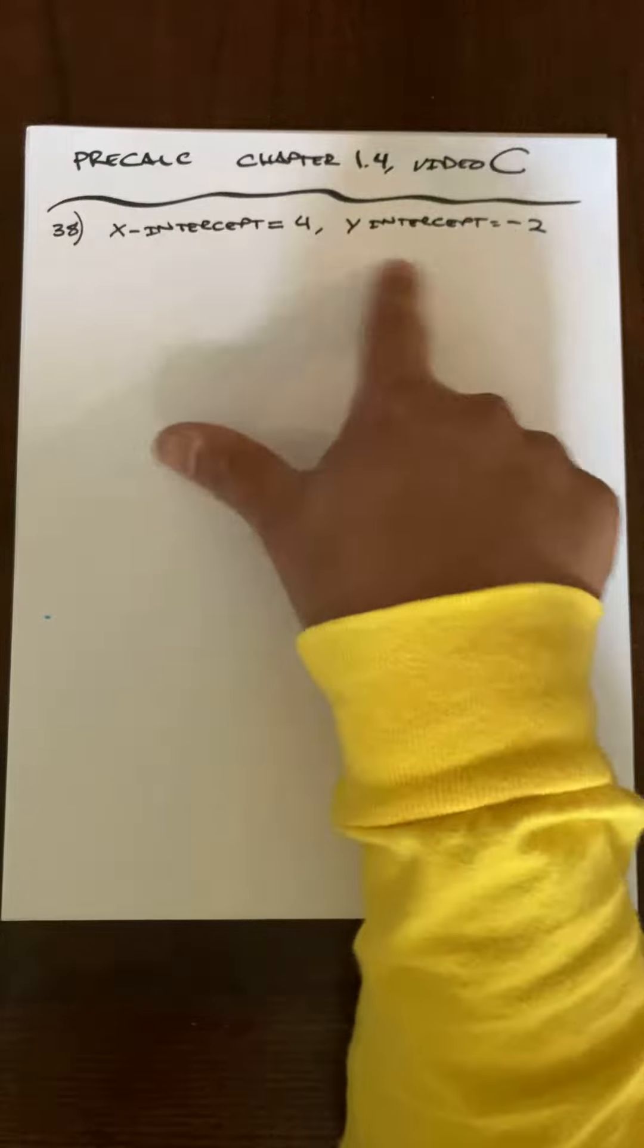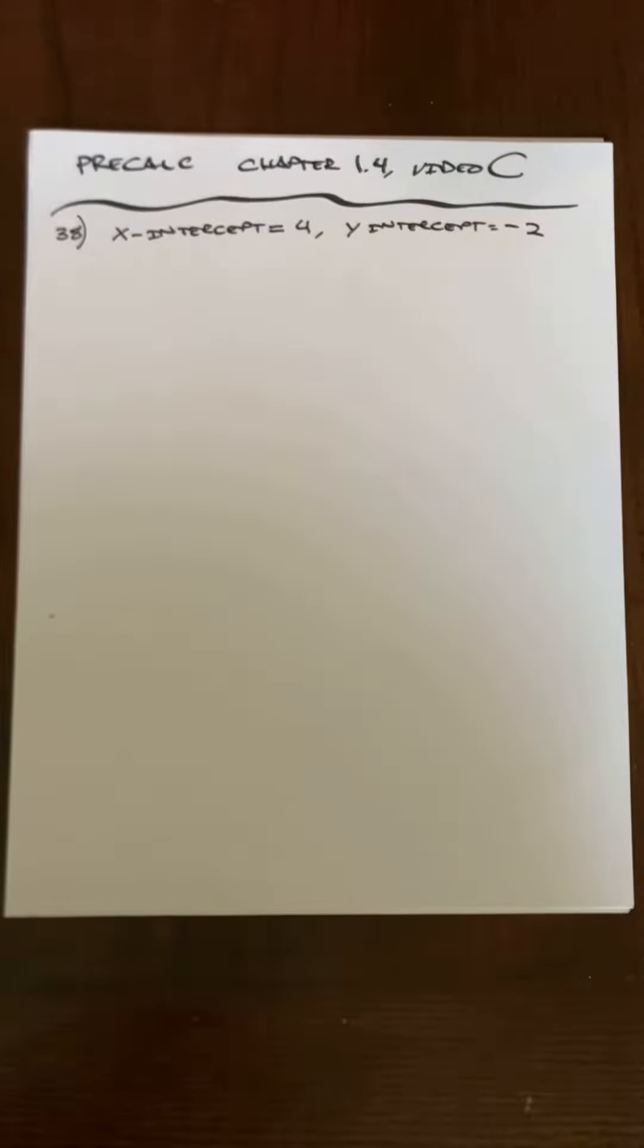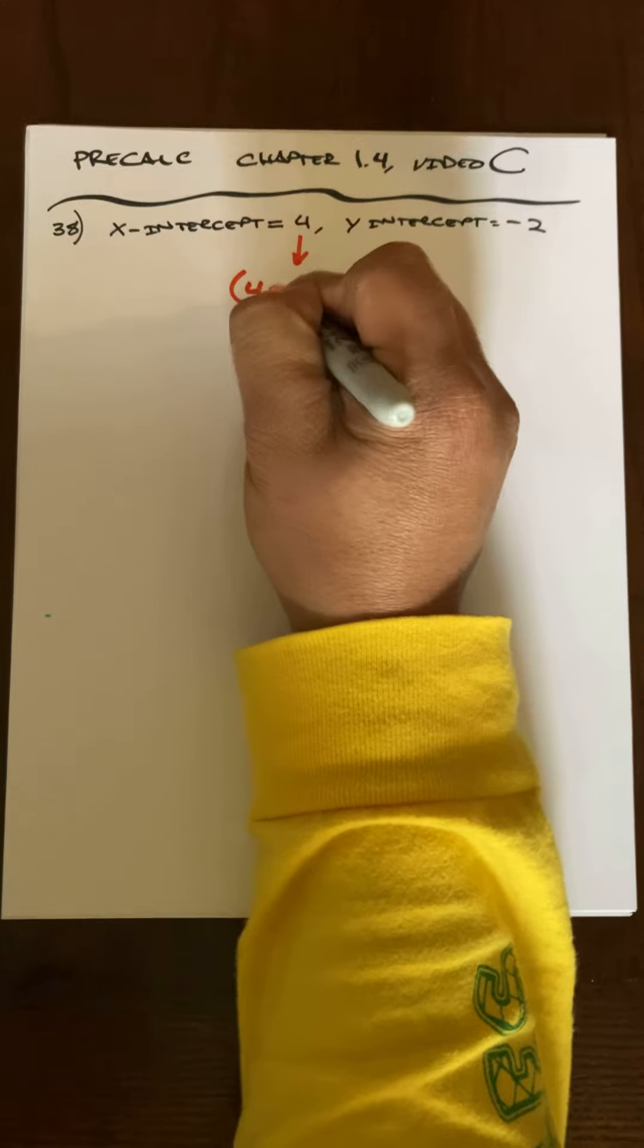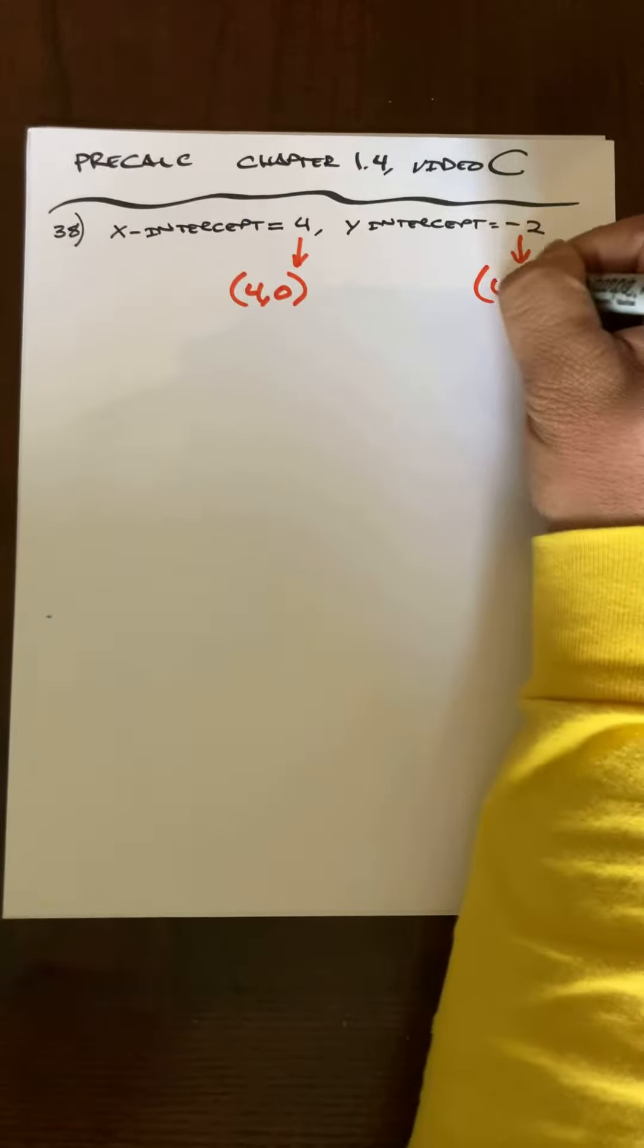Here they give us the x-intercept and the y-intercept. Of course, I'm going to use these two pieces of information to find the slope first. All right, so the x-intercept is happening at (4,0) and the y-intercept happens at (0,-2).